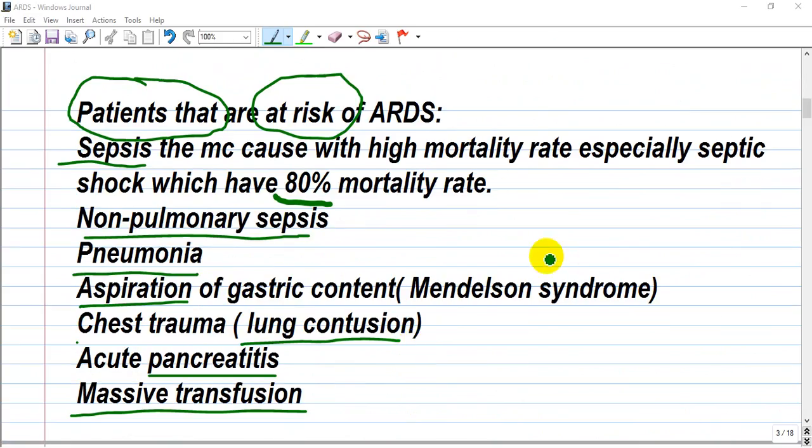Which patients are at risk of ARDS? Patients with sepsis, pneumonia, aspiration pneumonia, lung contusion, pancreatitis, and transfusion. Very high mortality rate with sepsis, especially septic shock, which has 80% or more mortality. Non-pulmonary sepsis where the primary foci are not in the lungs. Pneumonia is direct affection of the lungs. Aspiration of gastric content is called Mendelssohn syndrome, a very severe affection of the lungs with acid that has pH 2 to 4. It's a chemical burn of the lung.